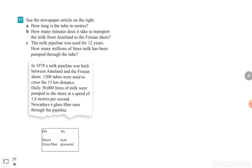1,200 tubes were used to cross the 50 kilometers distance. Daily, 30,000 liters of milk were pumped to the shore at the speed of 1.6 meters per second. Nowadays a glass fiber runs through the pipelines. So we have information like how many tubes there are in total: 1,200, the distance, and 30,000 liters of milk were pumped to the shore at the speed of 1.6 meters per second.